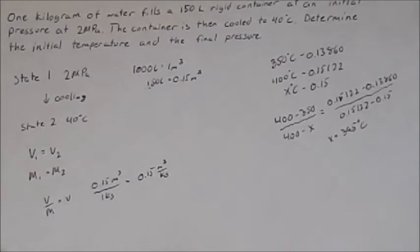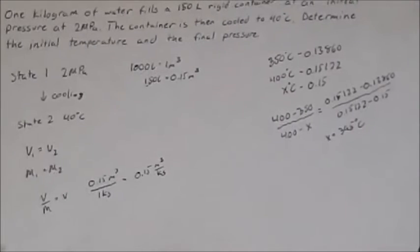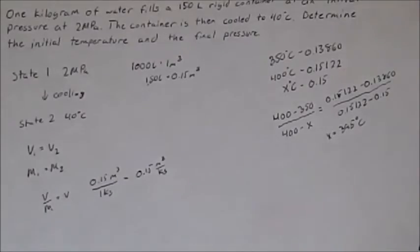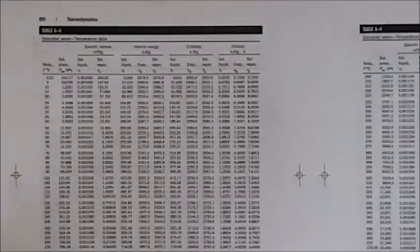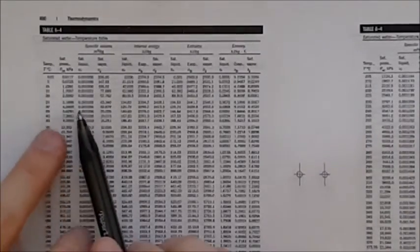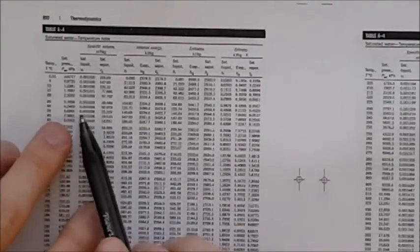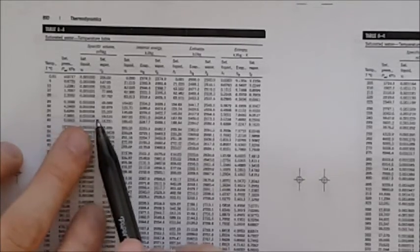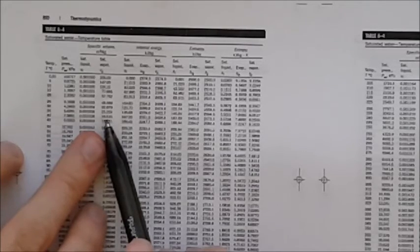Now we can find or we will be able to find the final pressure at state two by doing the same method. So we have 40 degrees Celsius so we start at the saturated water tables at 40 degrees Celsius and we look at the specific volume. So we see that we have a specific volume range of 0.001008 to 19.515 for 40 degrees Celsius.